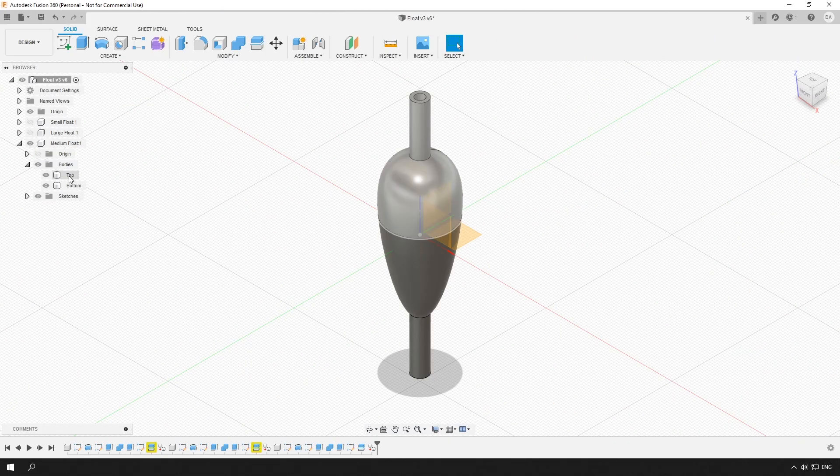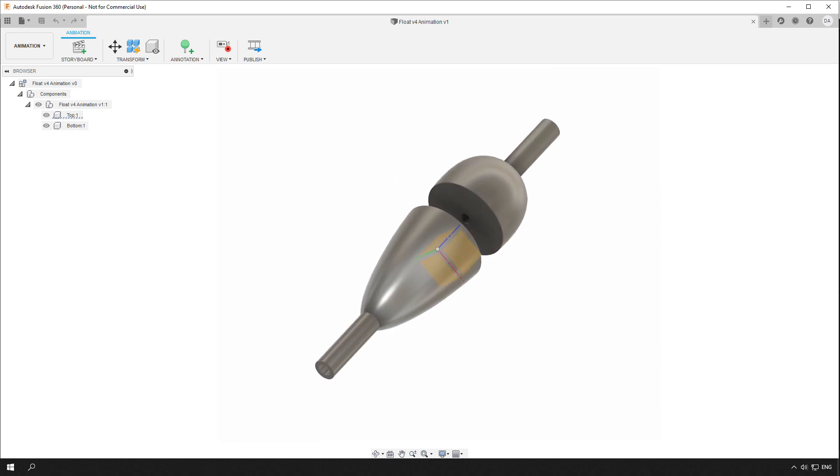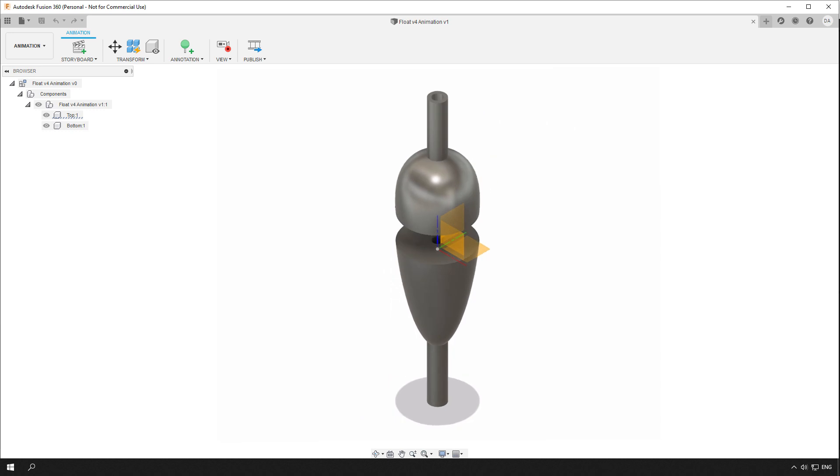After I finished tweaking and was satisfied with the shape of the float, I split it in two parts. This way it will be easier to print and use a different color for each part of the float.